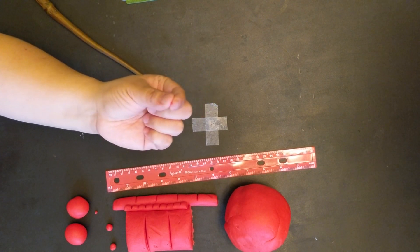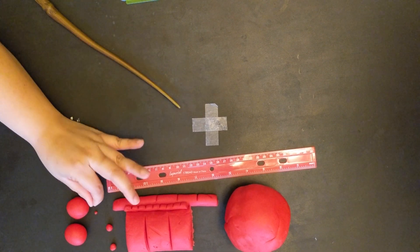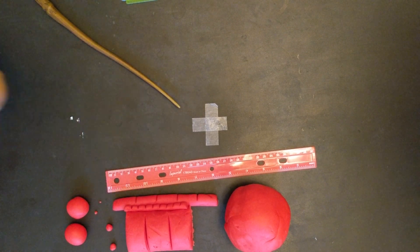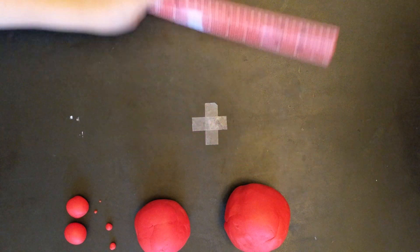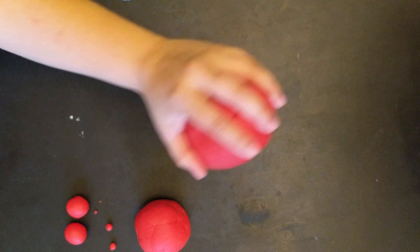Now, if we wanted to make Pluto, that would be a lot smaller, and I don't think we want to go there. Go ahead and roll Saturn up into a ball, and now let's compare how everything looks like side by side.